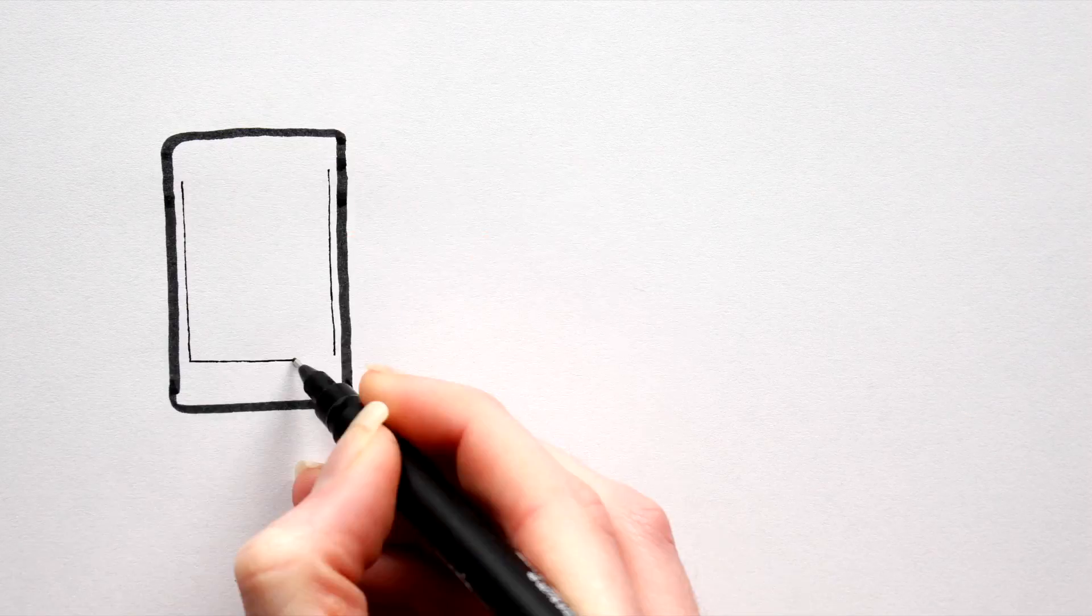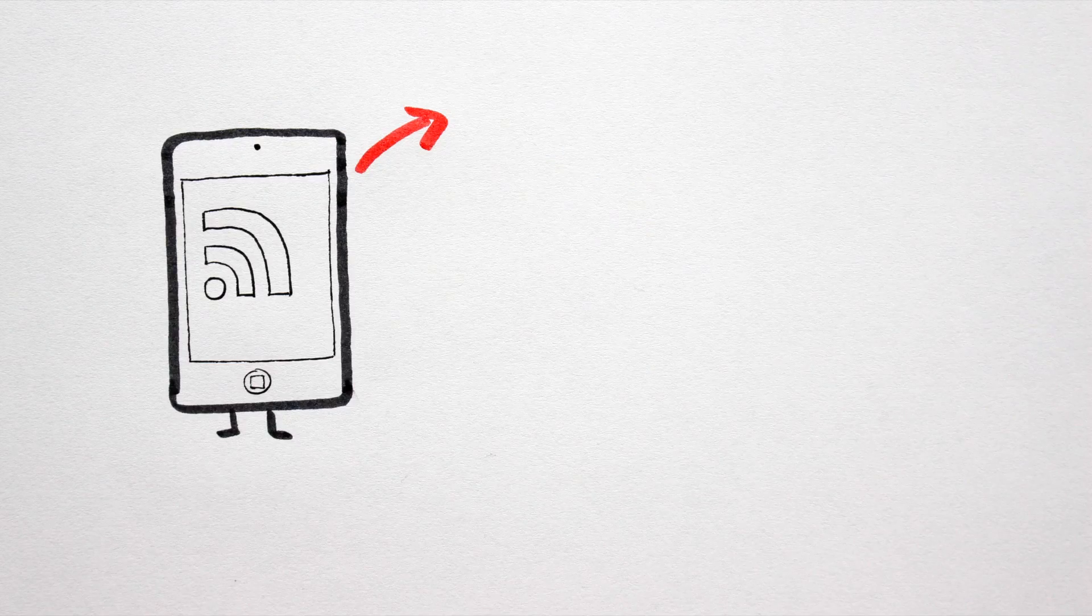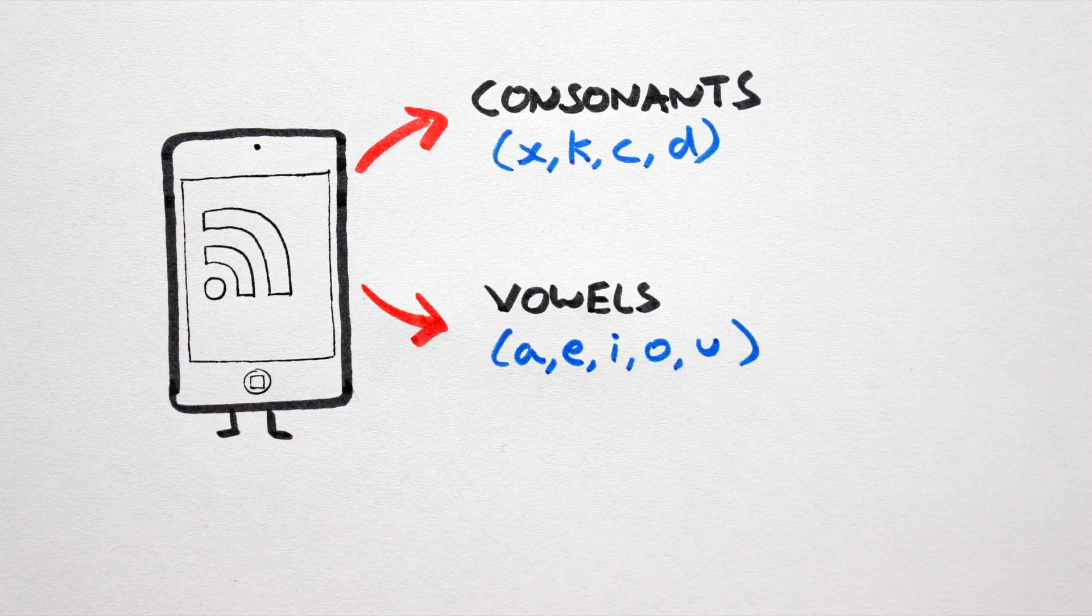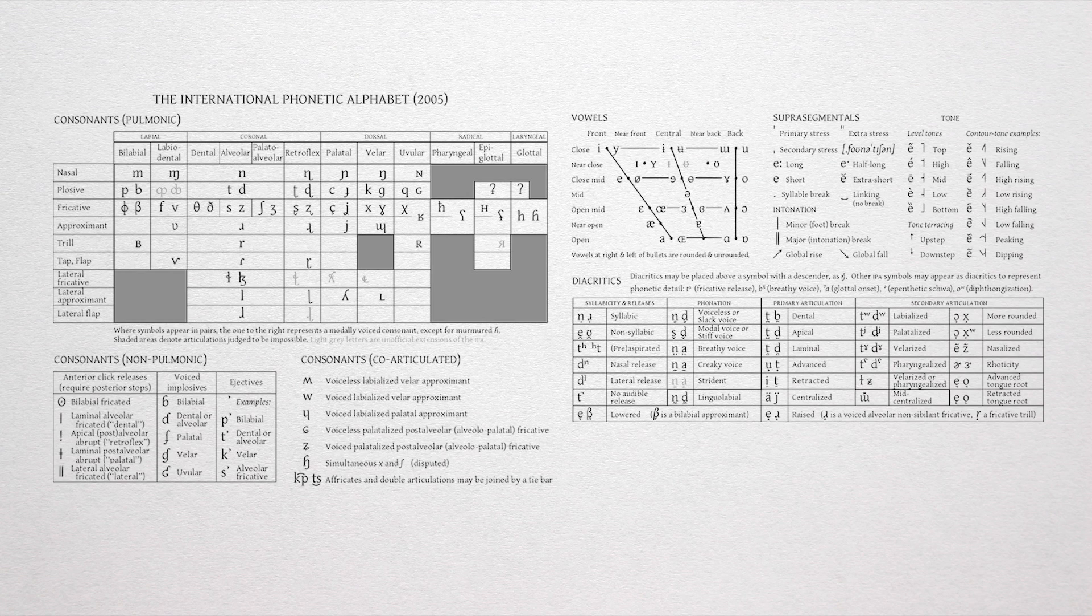Broadly speaking, sounds or phones exist in two forms: consonants and vowels. The IPA or International Phonetic Alphabet is a collection of all possible sounds humans can produce, with each unique sound represented by a unique symbol.